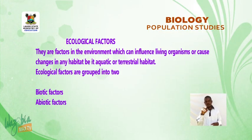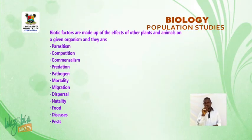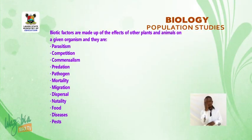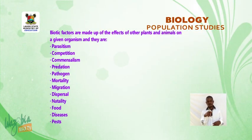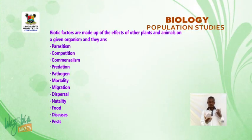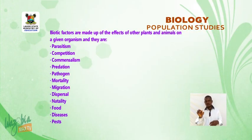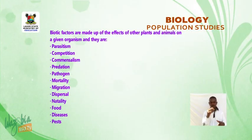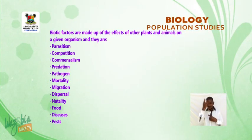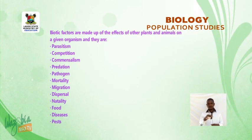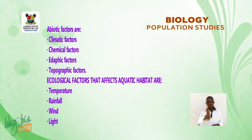Biotic factors are made up of the effects of other plants and animals on a given organism. They include: parasitism, competition, predation, pathogens, mortality, migration, dispersal, natality, food, diseases, and pests.